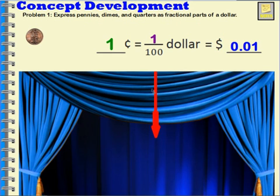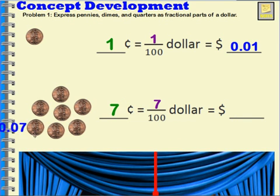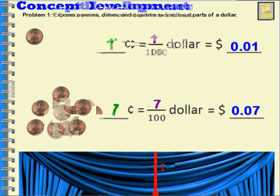Let's try another one. This time we have seven pennies. Seven pennies is equal to seven cents, which is seven hundredths of a dollar, which is equal to zero decimal zero seven, or seven hundredths of a dollar, or seven cents.